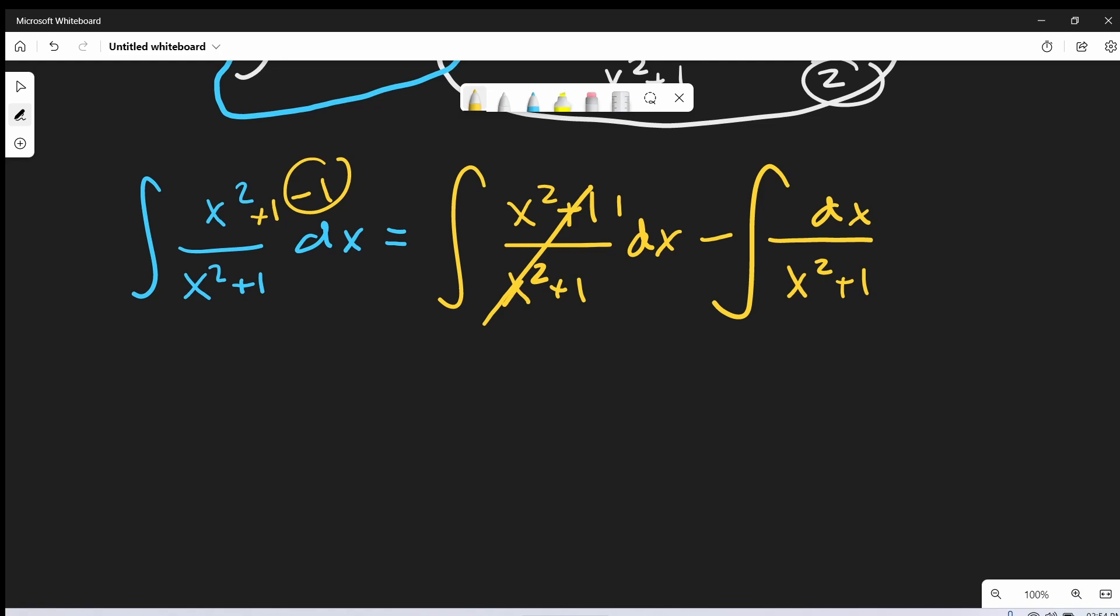Now let's do this integral. It's going to be pretty straightforward, right? So we're just integrating 1 here. So we're going to have an x minus, and this one is just actually our arctan. So we're going to have inverse arctan, inverse tan, whatever you want to call it. Let's call it arctan. Arctan x.